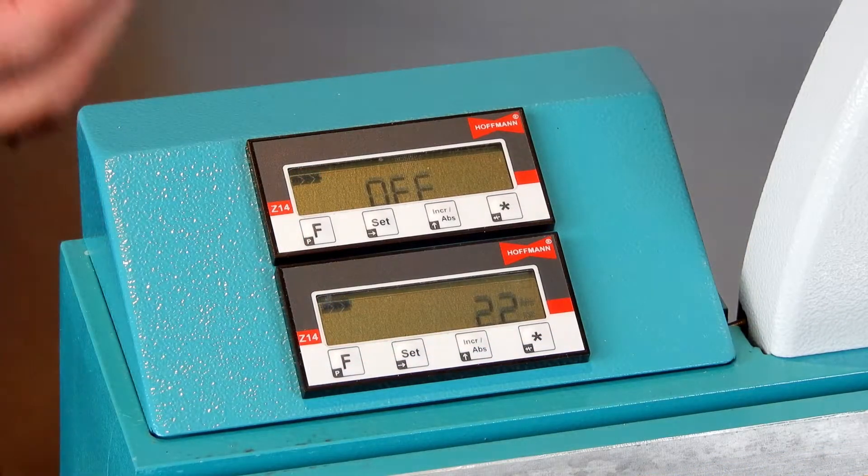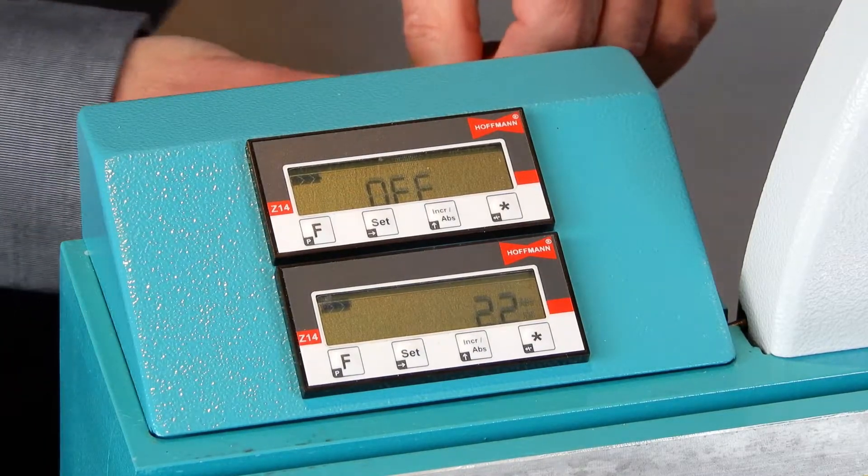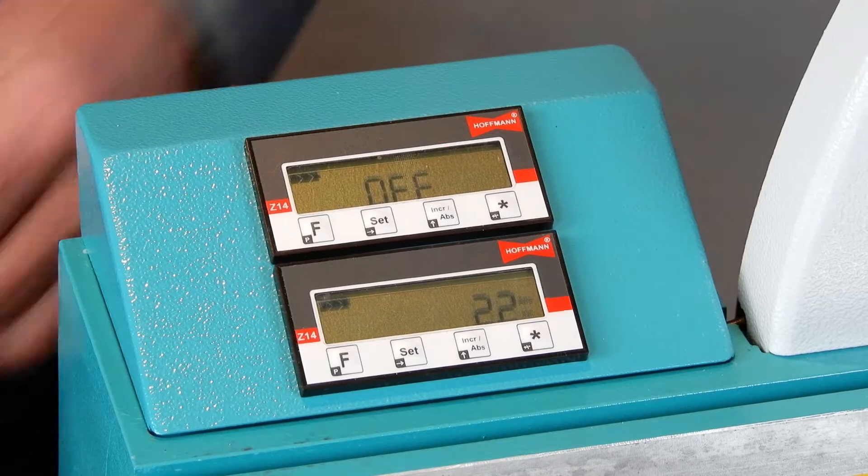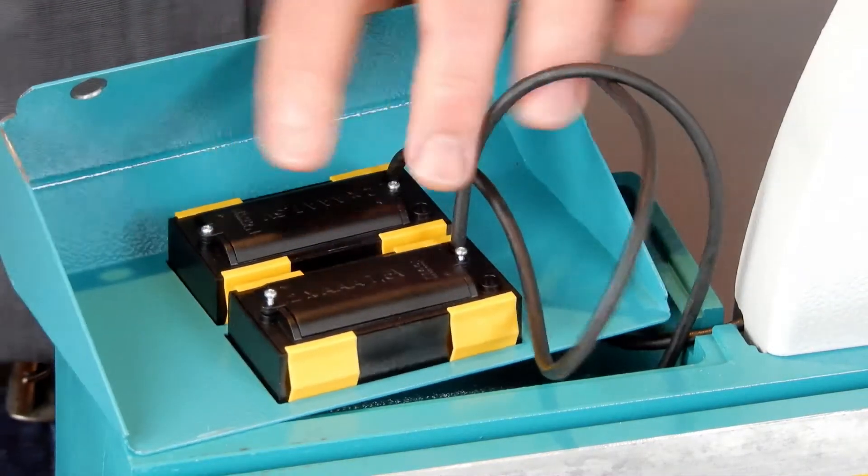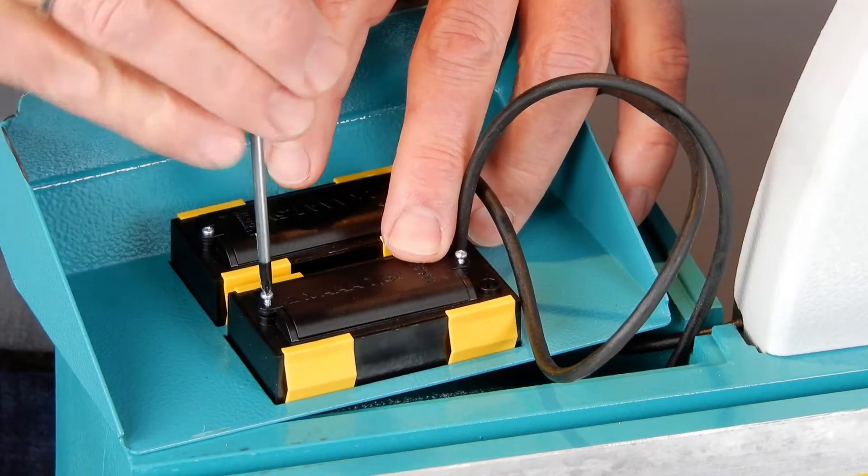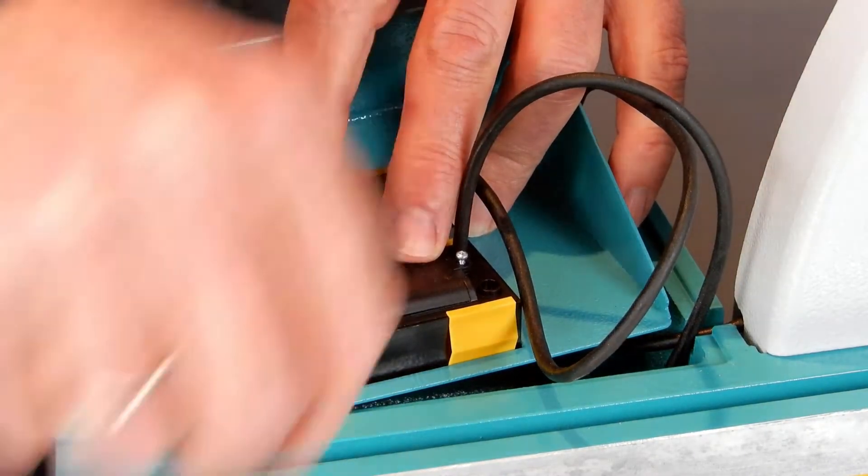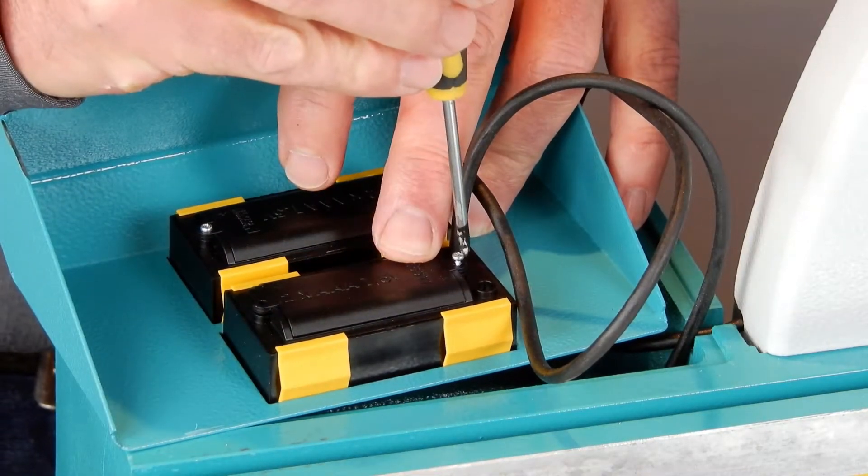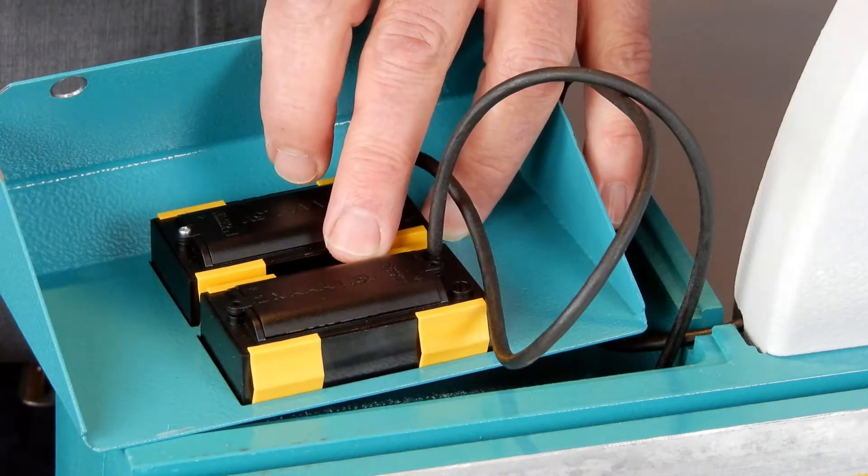Loosen the two screws on the rear side of the display housing and turn it over for easy access to the battery pegs. Use a very fine screwdriver and open both little screws on the rear side of the display. Take out the old batteries and replace them with new ones.